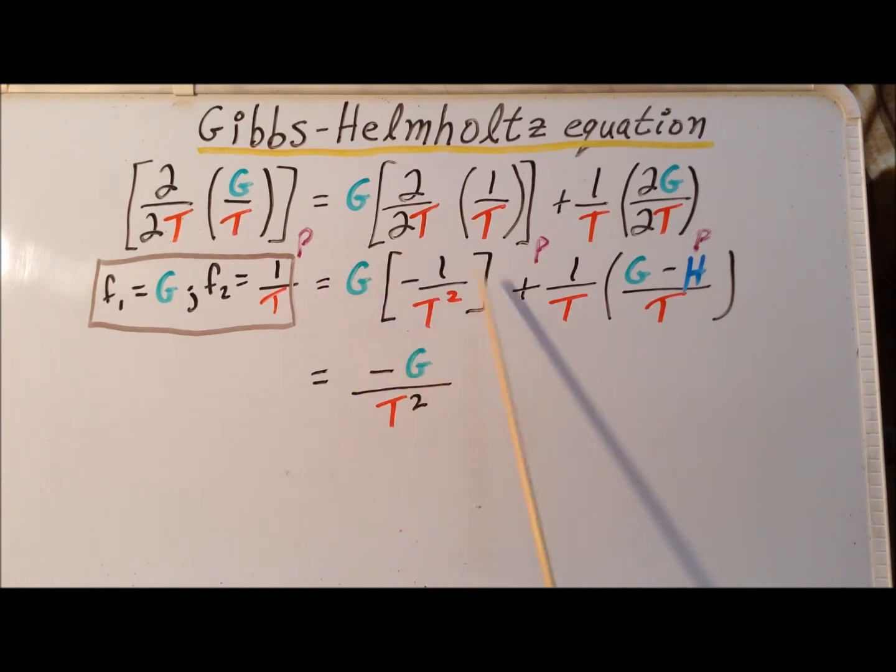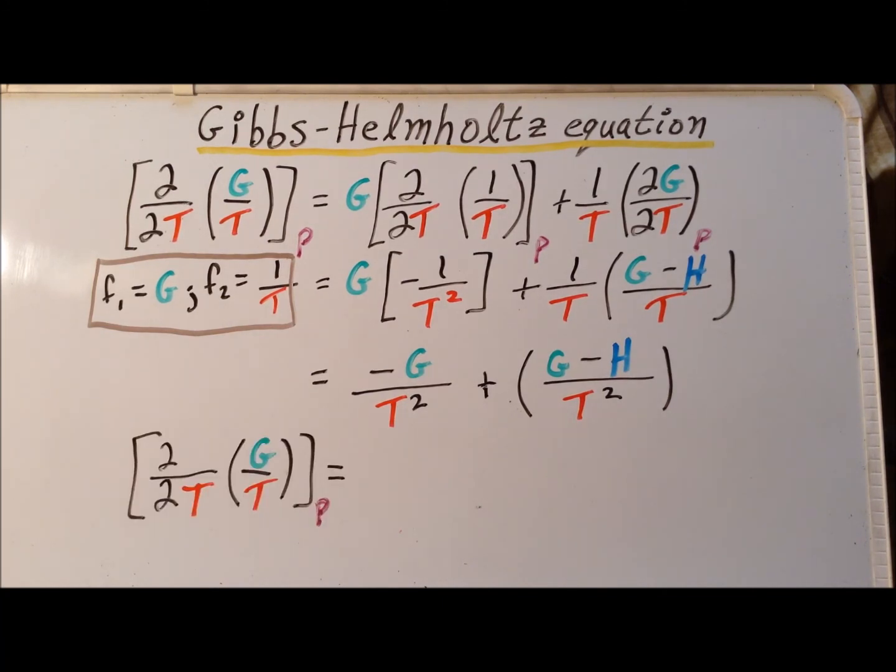The first term becomes minus G divided by T squared. The second term, multiplying by the 1 over T, gives us G minus H divided by T squared. On the right-hand side, we notice that minus G over T squared and positive G over T squared, these are going to cancel, and what we're all going to be left with is a minus H divided by T squared on the right-hand side.